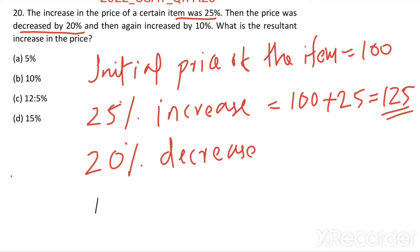10% of 125 equal to place a decimal after one place. Then it become 12.5. This is 10% of 125.